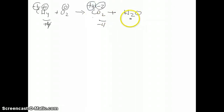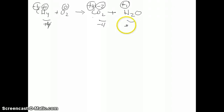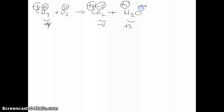For H2O: hydrogen is plus one, so two hydrogens give plus two total, which means oxygen must be negative two. So we've now determined all the oxidation numbers for every element in the reaction.